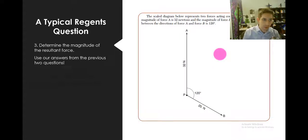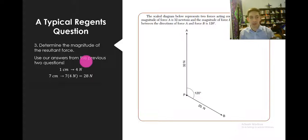Use our answers from the previous two questions. So if 1 centimeter represents 4 newtons, and we just measured the resultant force as 7 centimeters, then we can just multiply 7 by the scale factor. And that's why the scale factor is so useful. If we know how much 1 centimeter is, or how much 1 centimeter represents, then we can find any other amount, any other length.